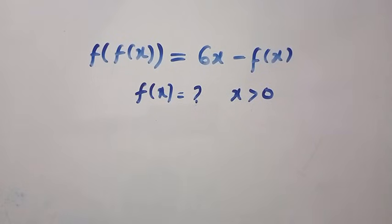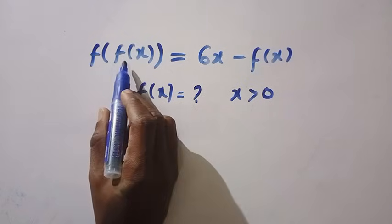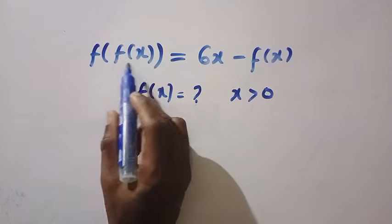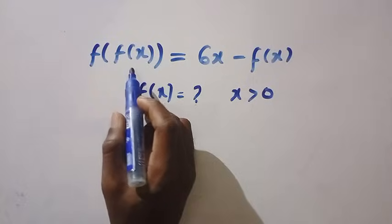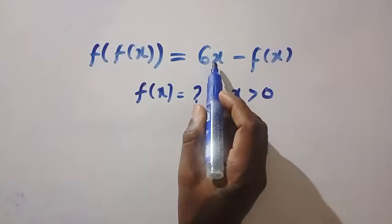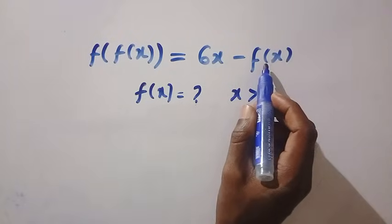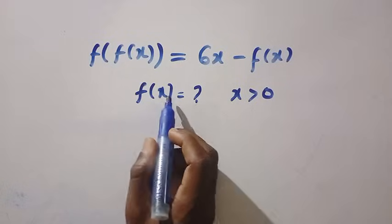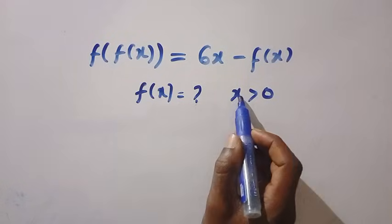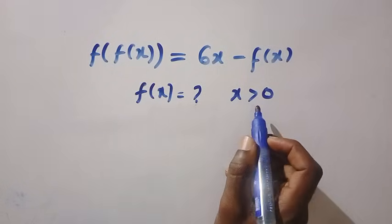Good day viewers, you are welcome. How to solve this nice functional equation: given that f of f of x, which is a composite function, equals 6x minus f of x. We need to get f of x if x is greater than 0.